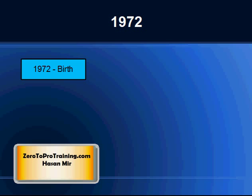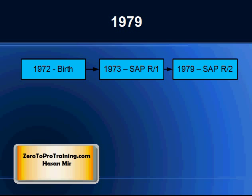Here is a quick timeline for SAP products. The company was founded in 1972. The first release, R1, was released in 1973. The R stands for real-time data processing. The second release, R2, was released in 1979.